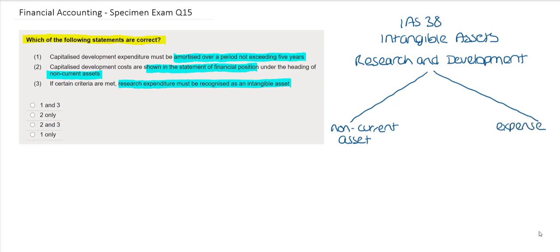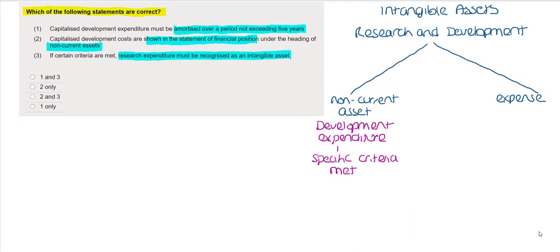IAS 38 tells us that development expenditure should be included as a non-current asset if it meets the specific criteria of the standard. It should then be amortised over its expected life. The costs to be expensed include research costs plus any development costs that do not meet the criteria.